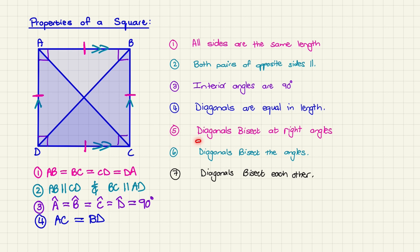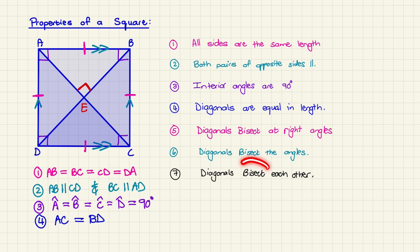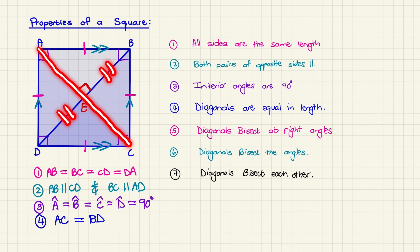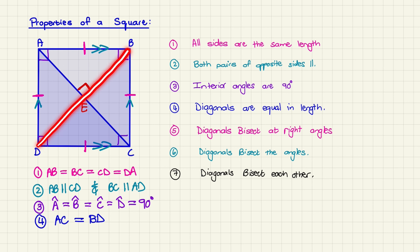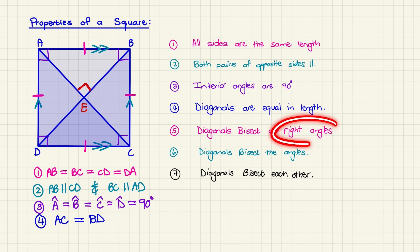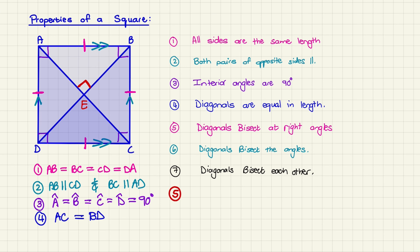Number five: the diagonals bisect at right angles. Where the diagonals meet, I'm going to mark that point with the letter E. The word bisect means to cut each other in half. So line AC is cutting BD in half, and line BD is cutting AC in half, and they intersect at 90 degrees. For this property we write it as angle E = 90 degrees.